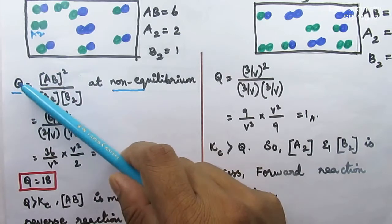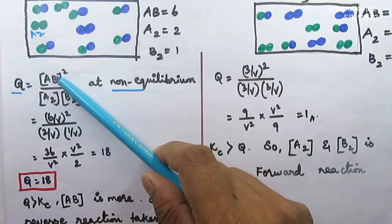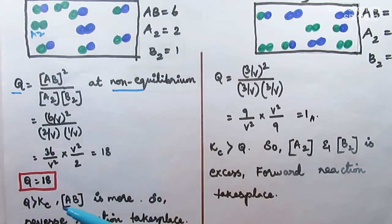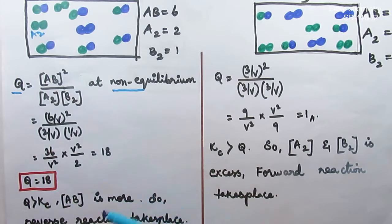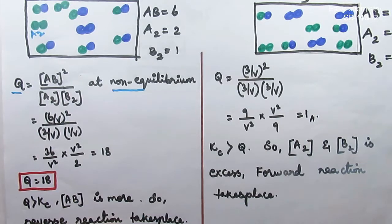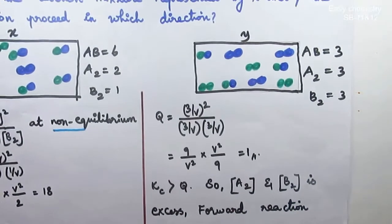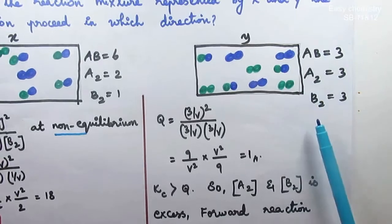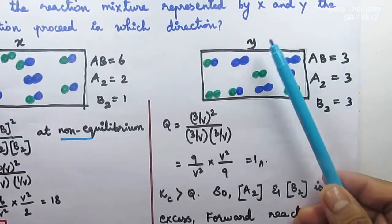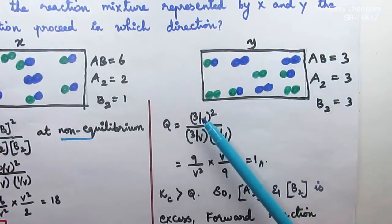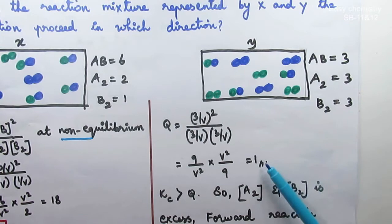Since Q is greater than Kc, the concentration of AB is greater, meaning the reaction proceeds in the reverse direction — that is the reverse reaction. Now, if we calculate y, y equals 4. If we calculate Q again, the answer is 1.